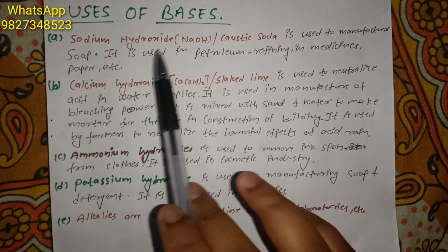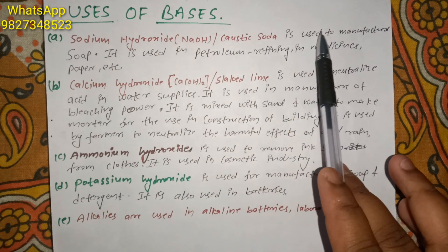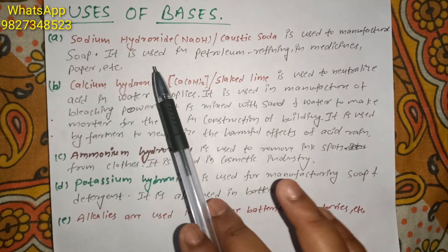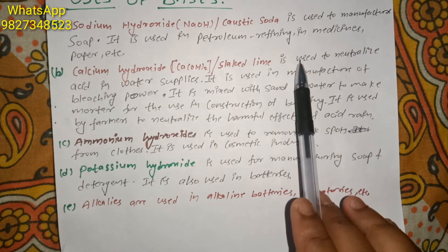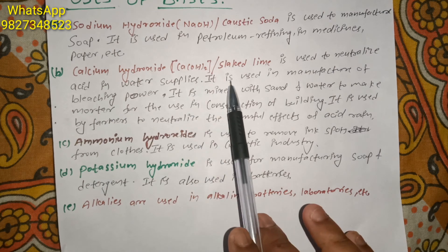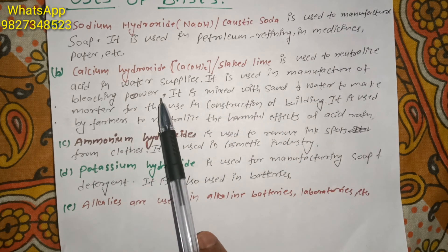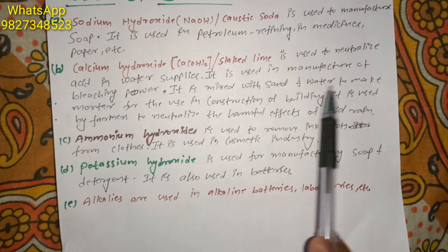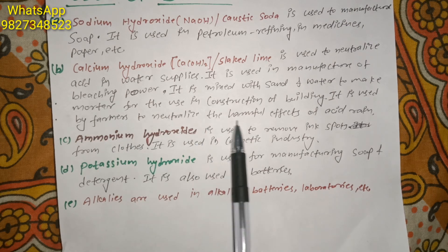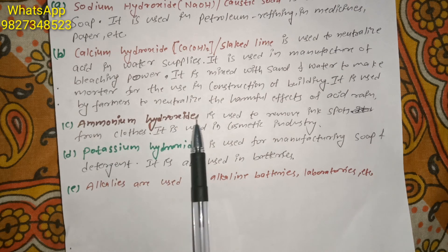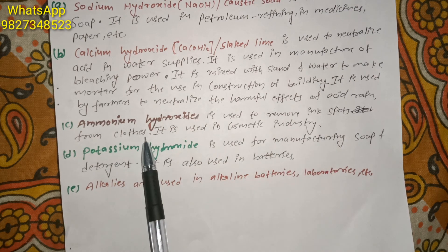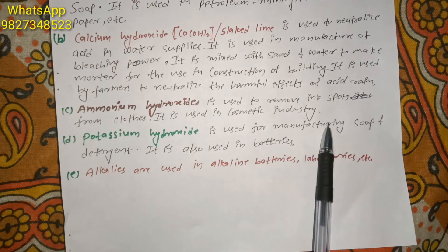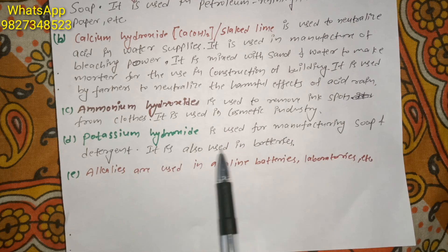Some uses of bases: Sodium hydroxide, also called caustic soda, is used to manufacture soap, in petroleum refining, medicine, and paper industries. Calcium hydroxide, also called slaked lime, is used to neutralize acid in water supplies, manufacture bleaching powder, make mortar with sand and water for construction, and by farmers to neutralize harmful effects of acid in soil. Ammonium hydroxide is used to remove ink spots from clothes and in cosmetic industries. Potassium hydroxide is used for manufacturing soap and detergents and in batteries.